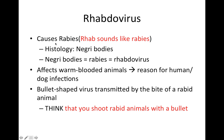Rhabdovirus causes rabies — that's an easy one to remember because it's almost in the name and it sounds like rabies. So rhabdo we'll just think of it as rabies virus. As far as histology is concerned, it has these unique things called Negri bodies, and so anytime you see anything about Negri bodies we're going to think about rabies and rhabdovirus. It affects warm-blooded animals and that's the reason for human-dog infections. It is a bullet-shaped virus transmitted by the bite of a rabid animal. To remember that it's bullet-shaped, we're going to think that you should shoot rabid animals with a bullet.